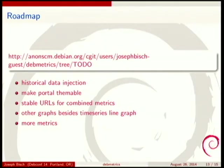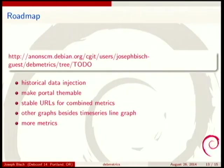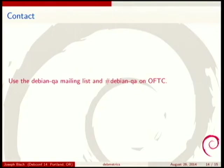We have a to-do list. One item is making DebMetrics portable and themable so that you could replace the Debian logo with your own logo, allowing other organizations to use it too. To contact us, use the Debian QA mailing list or Debian QA on OFTC.